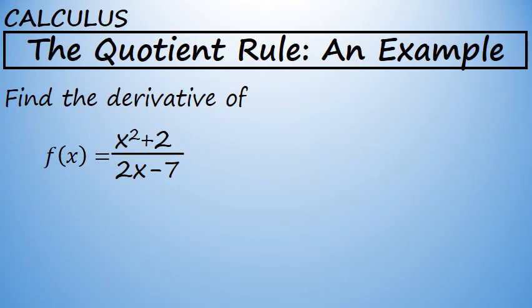To find the derivative of f of x equals x squared plus 2 over 2x minus 7, we will use the quotient rule for differentiation.